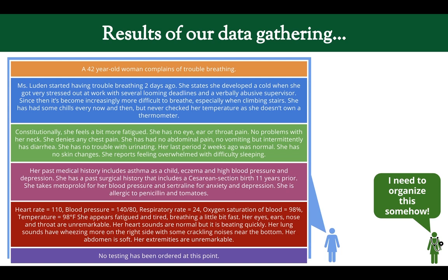That's a shortened history of present illness. For the review of systems: constitutionally she feels more fatigued; eyes, ears, nose, and throat — no pain; no neck, chest, or belly pain; no vomiting but occasional diarrhea; no trouble with urination; last period was two weeks ago and normal; no skin changes; and she reports feeling a little overwhelmed with some difficulty sleeping.